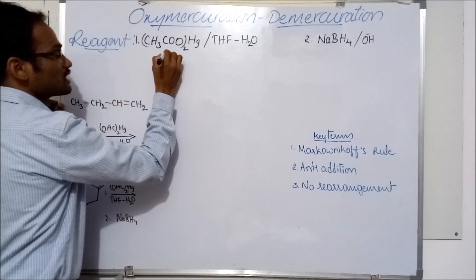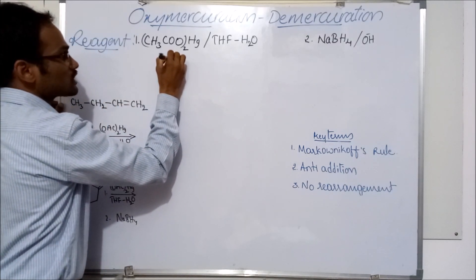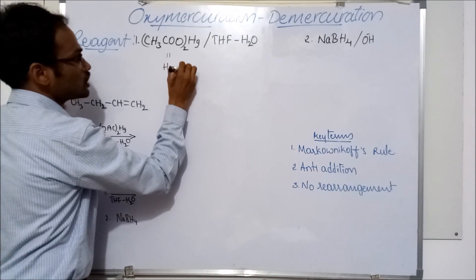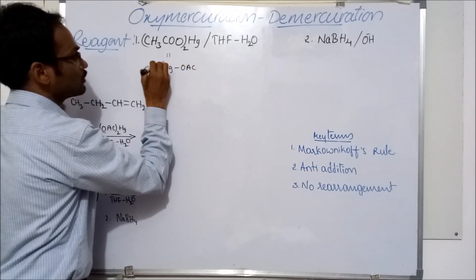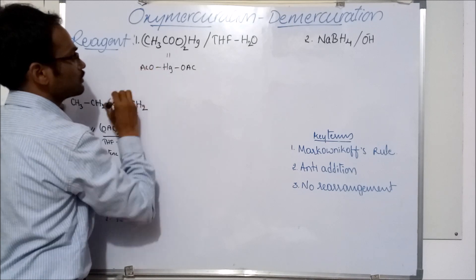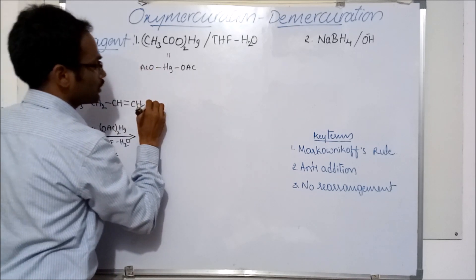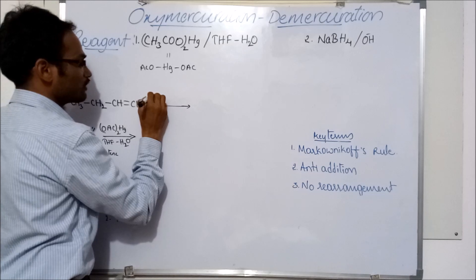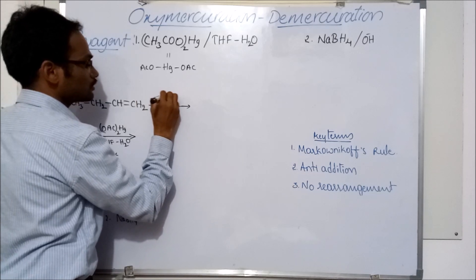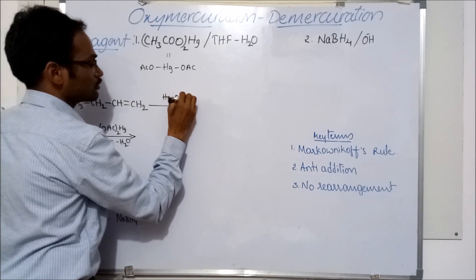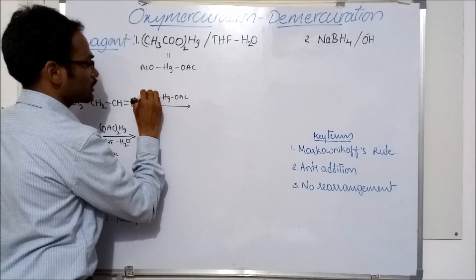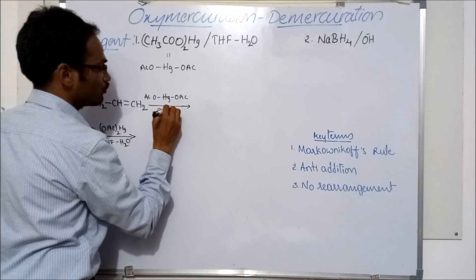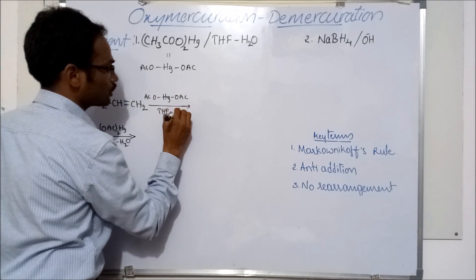Now let us see the mechanism. First, mercuric acetate — I'll write it as Hg(OAc)₂. Now, alkene on treatment with mercuric acetate in the presence of tetrahydrofuran and water...